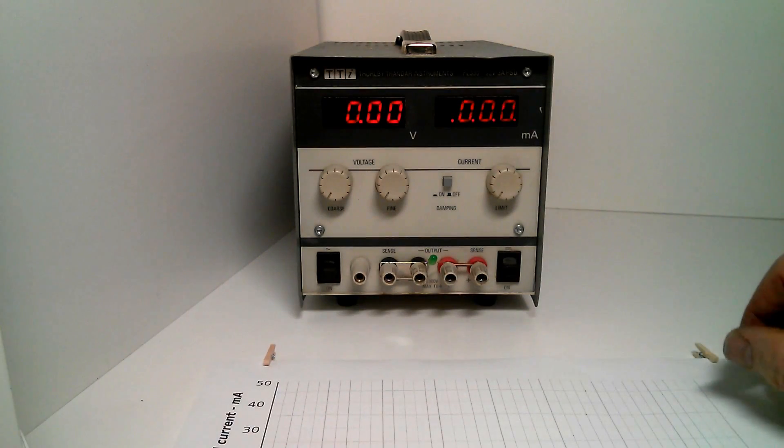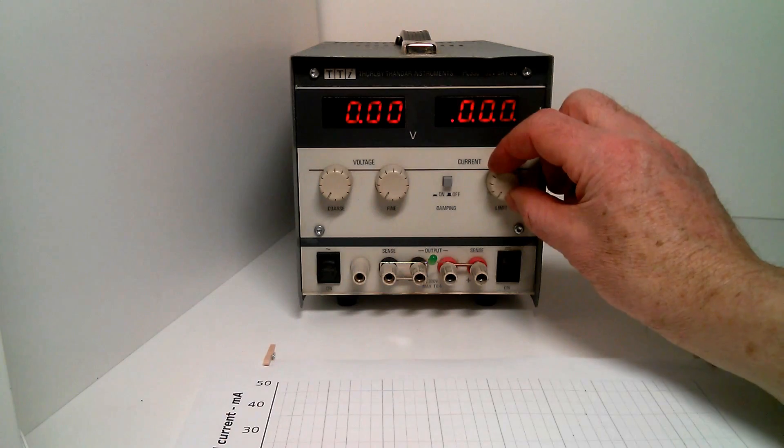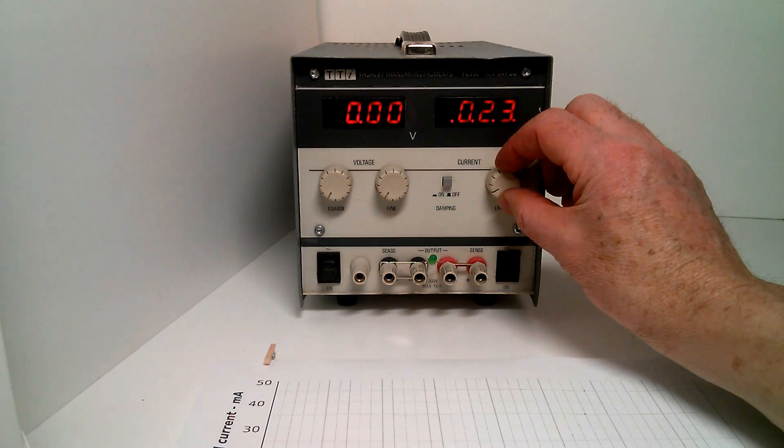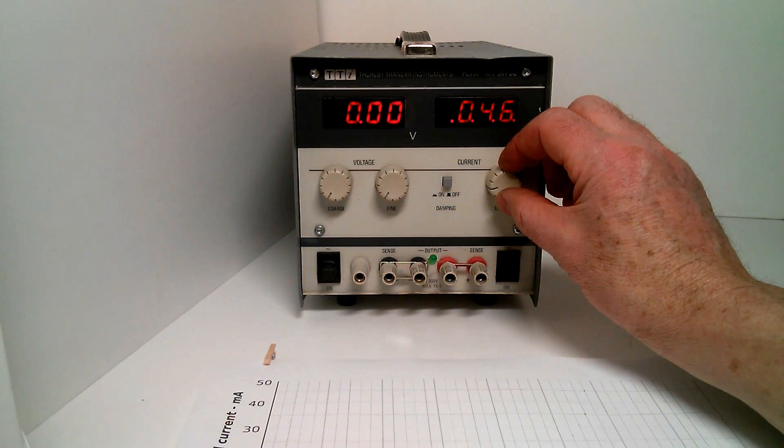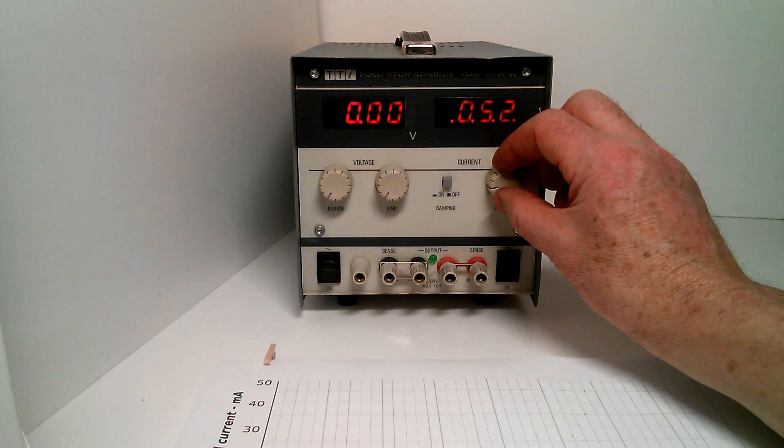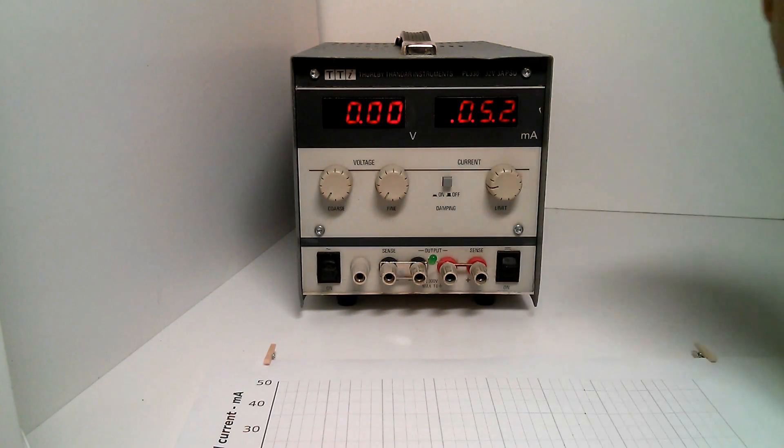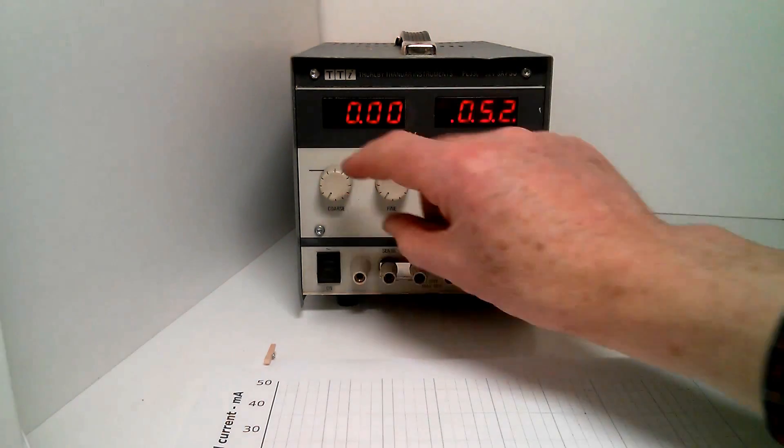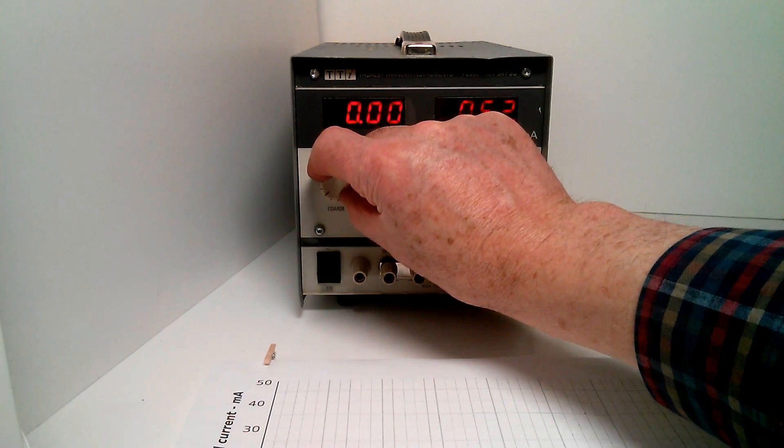The bench power supply makes this quite easy. We can adjust and set a limit on the current. In this case I'm going to set it to 50 milliamps, which the LED can tolerate for some time. The output is switched off at the moment, so nothing is happening. We can adjust our parameters or settings.